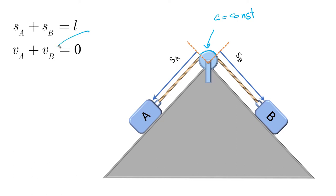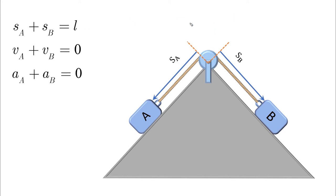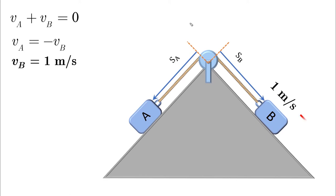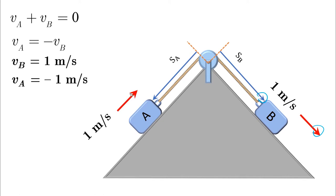By taking the derivative we get vA plus vB equals zero, and taking the derivative again gives aA plus aB equals zero. So vA equals minus vB. If vB is +1 m/s (positive), then vA is −1 m/s (negative), meaning it moves against the assumed coordinate direction of A.